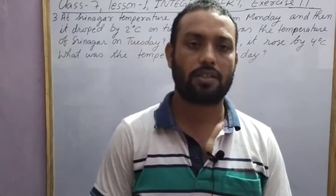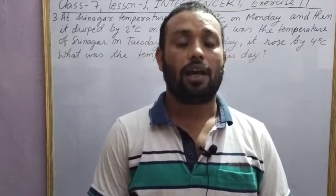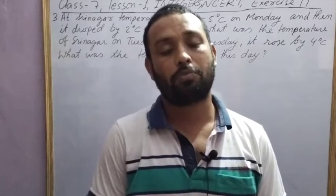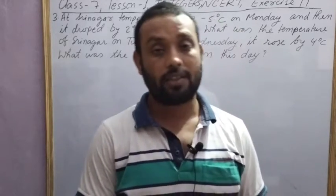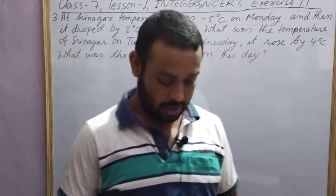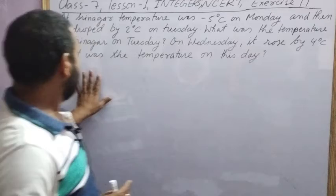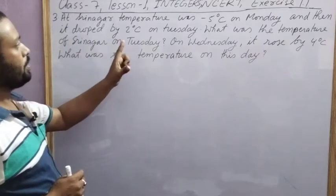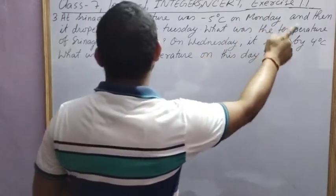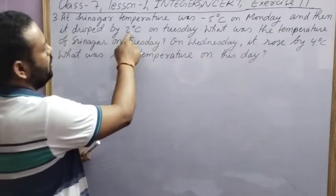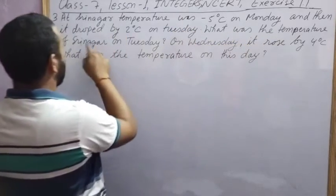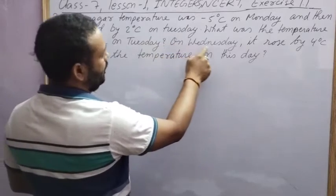Welcome dear students, today I am going to teach mathematics of Class 7 NCERT book, Lesson 1 on integers, Exercise 1.1, Question Number 3. Question 3 says: At Srinagar, temperature was minus 5 degrees Celsius on Monday, and then it dropped by 2 degrees Celsius on Tuesday. What was the temperature of Srinagar on Tuesday?